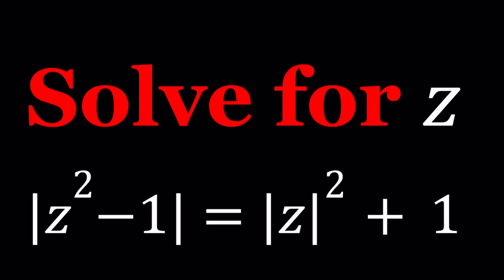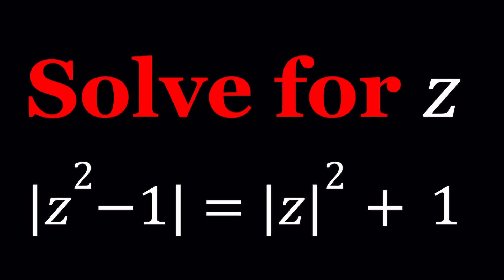Welcome to A Plus B I. This channel is all about complex numbers, and in this video we're going to be solving an interesting function from one of the Olympiads. We have the absolute value of z squared minus 1 equals the absolute value of z squared plus 1, where z is a complex number.